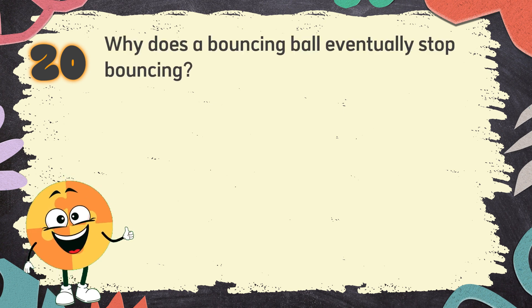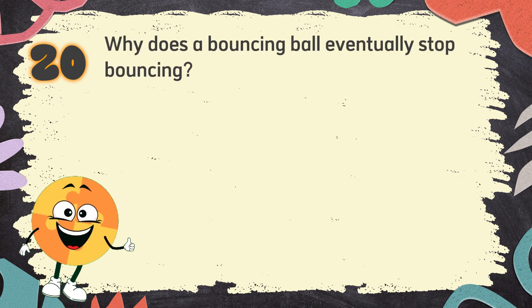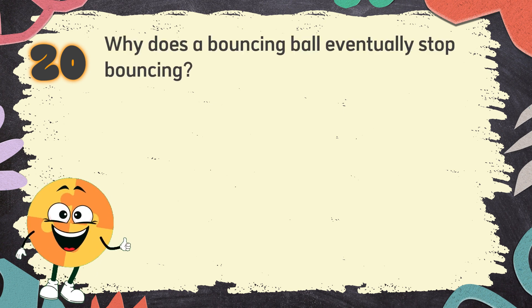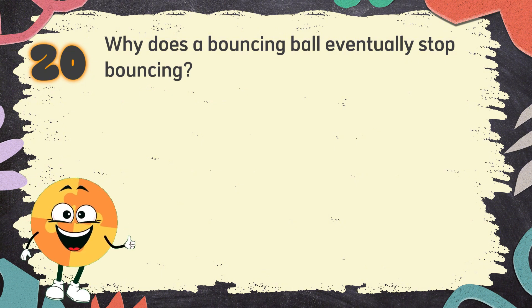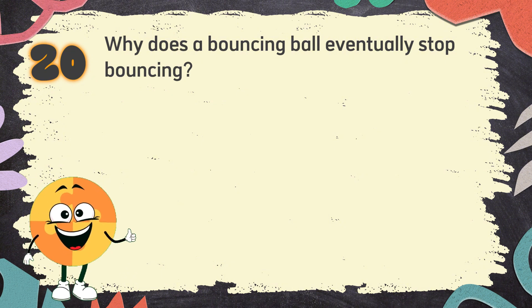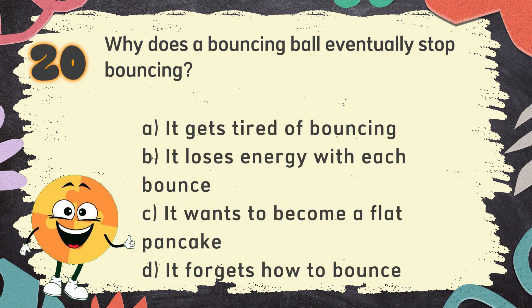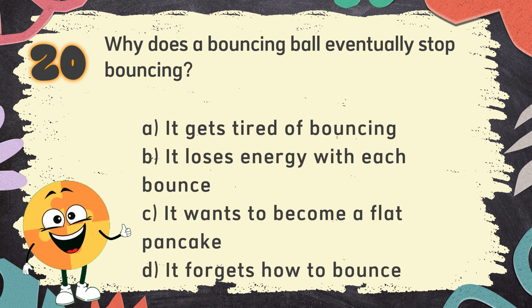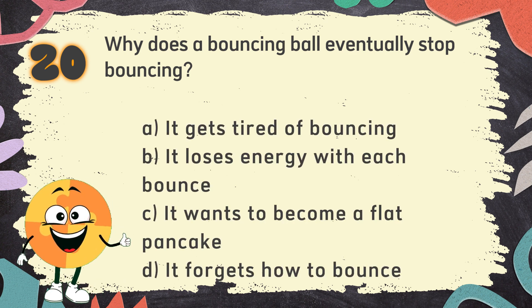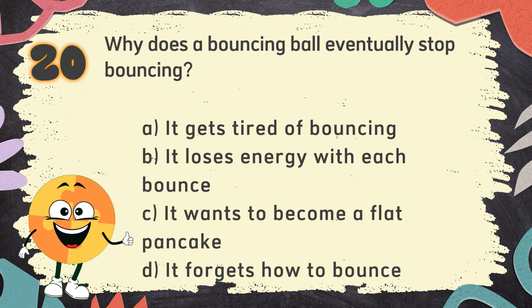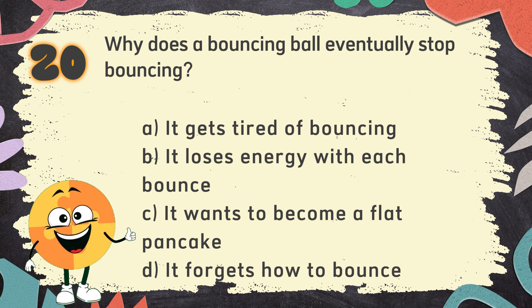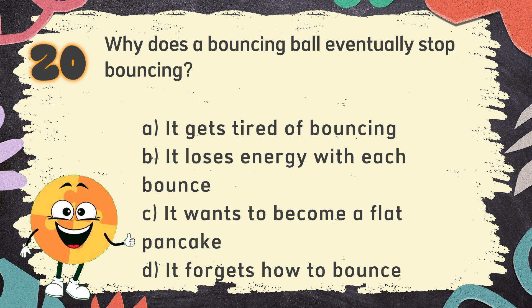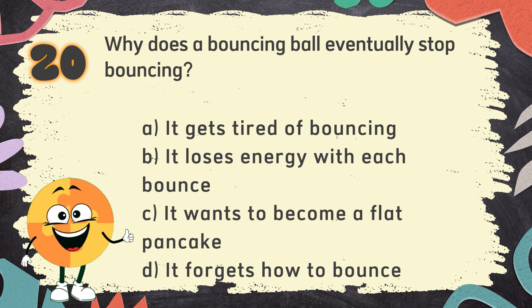Number 20. Why does a bouncing ball eventually stop bouncing? The choices are: A. It gets tired of bouncing, B. It loses energy with each bounce, C. It wants to become a flat pancake, D. It forgets how to bounce.